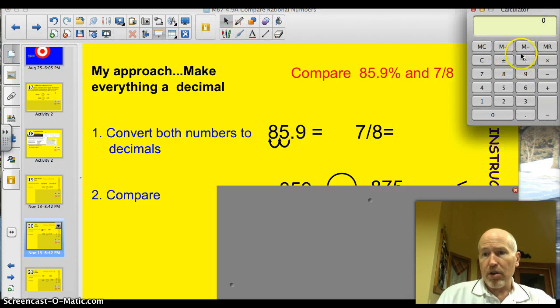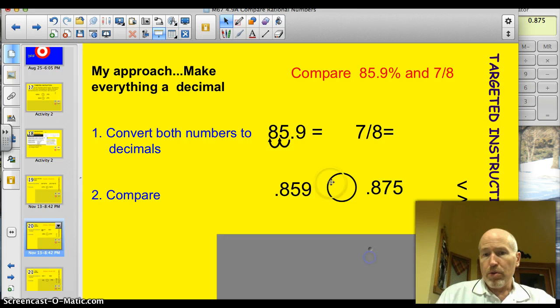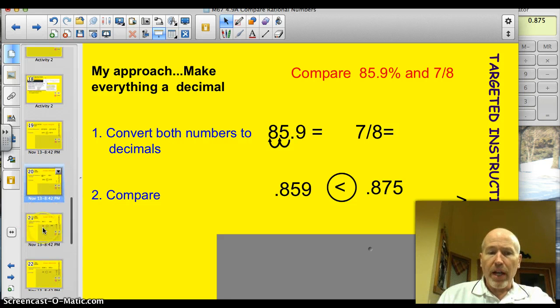Now, we just have to do that with 7 eighths. That's a fraction. So, on our calculator, we take 7 divided by 8. You get 0.875. So, over here, I've taken and written those two down. Now, you just have to decide which one's bigger. 0.859 or 0.875? Well, no, just messing with you. 0.875 is larger than 0.859. So, this is the correct answer. Congratulations. You just compared your first set of rational numbers by converting to a decimal. This is what I'm going to stress all night long.